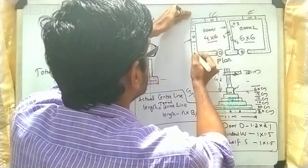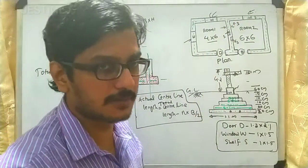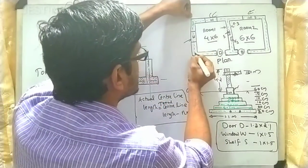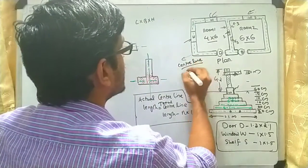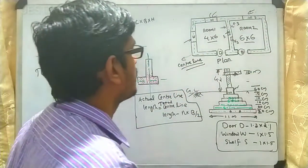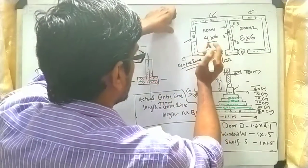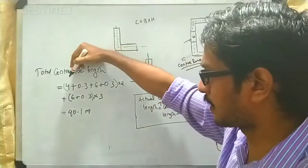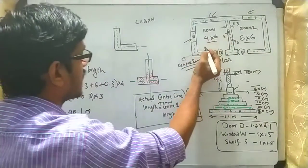The wall thickness is 0.3 meter. The green line represents the centerline length. After drawing the centerline, we calculate the total length. From the diagram, this length is 4 meters.